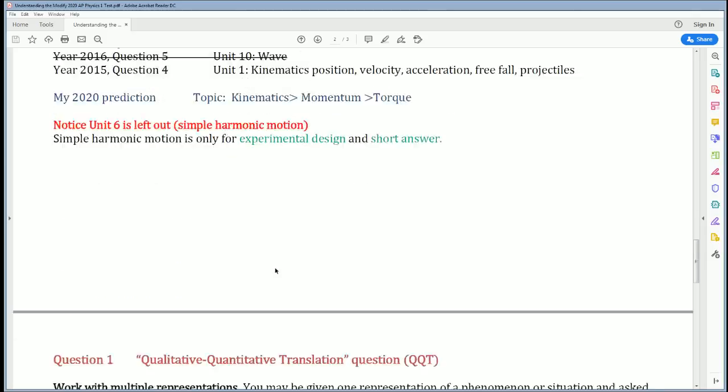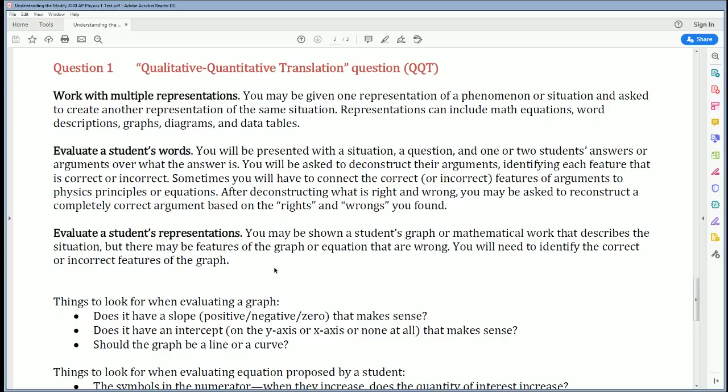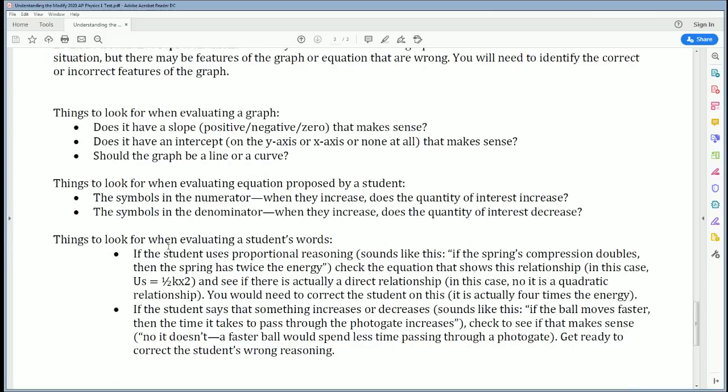I want to give you some more information on what the QQT is. The QQT has three parts. You're going to work with multiple representations—look at an equation, a chart, and a graph, and explain it. Second, you're going to evaluate a student's work. If you looked at the AP Physics workbook, they talk about Angelica making this argument, Blake making that argument—who's right, who's wrong, what part of the argument is correct or incorrect. Lastly, you're going to evaluate that student's representation, like Angelica presents this chart, Blake draws this graph. The workbook shows this in good detail.